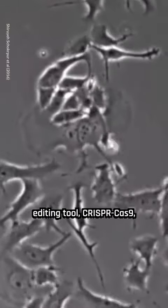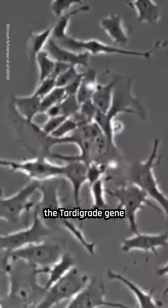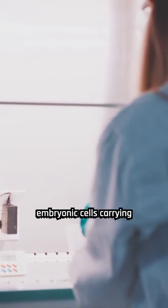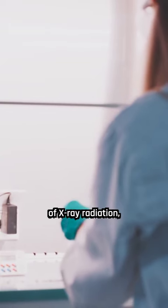Using the gene editing tool CRISPR-Cas9, the researchers successfully integrated the tardigrade gene into human DNA. In laboratory experiments, nearly 90% of human embryonic cells carrying the water bear gene could withstand lethal doses of x-ray radiation.